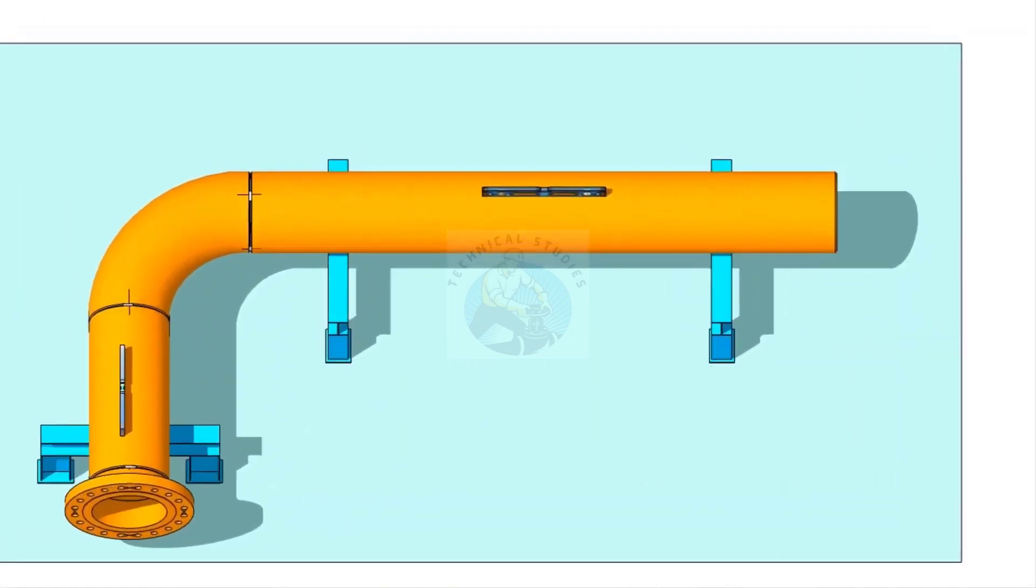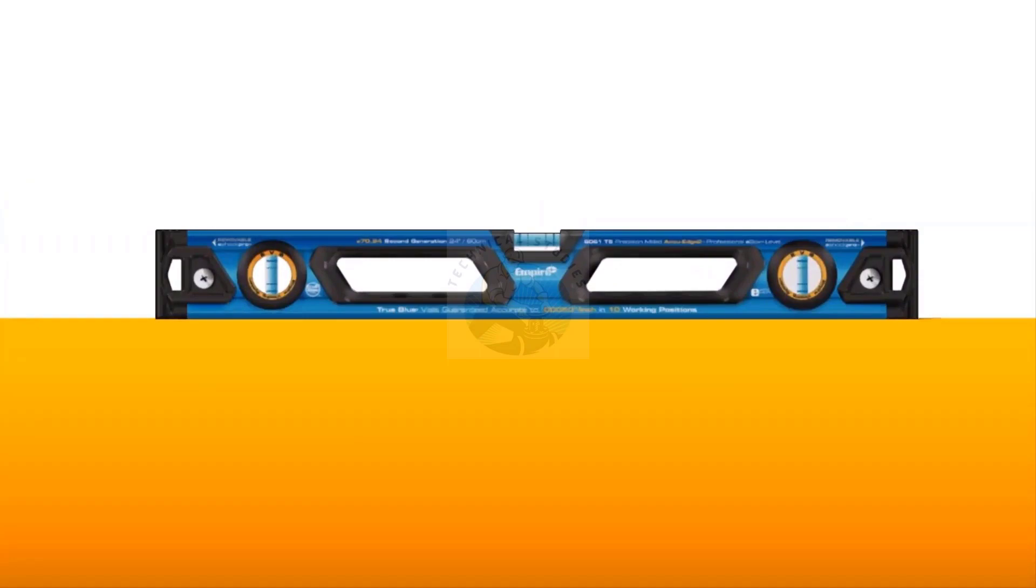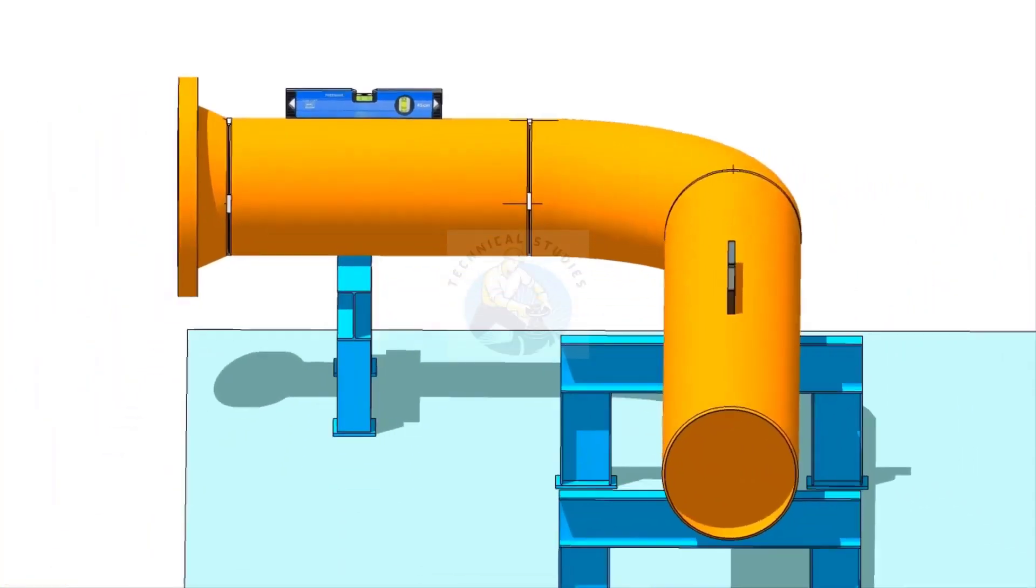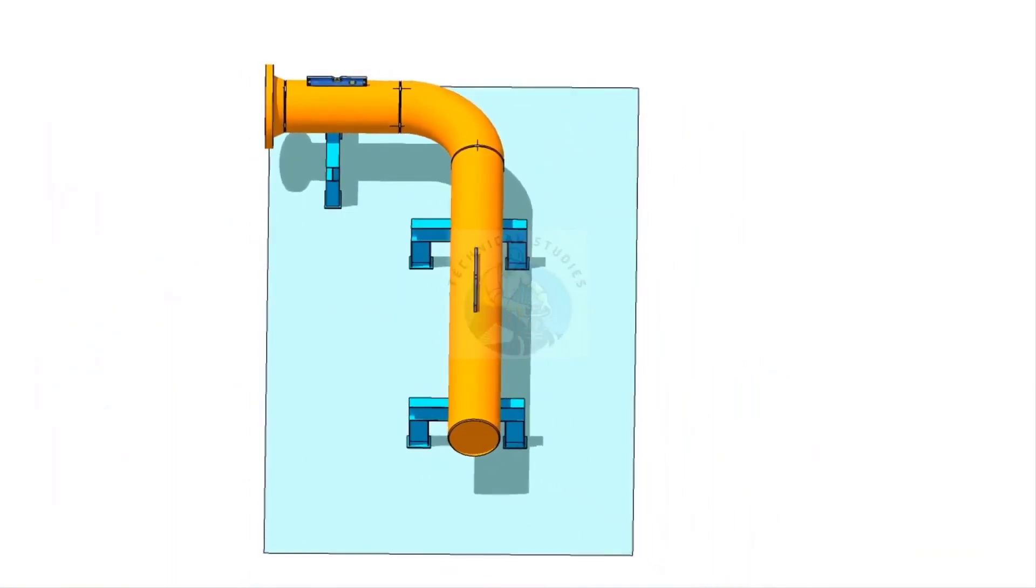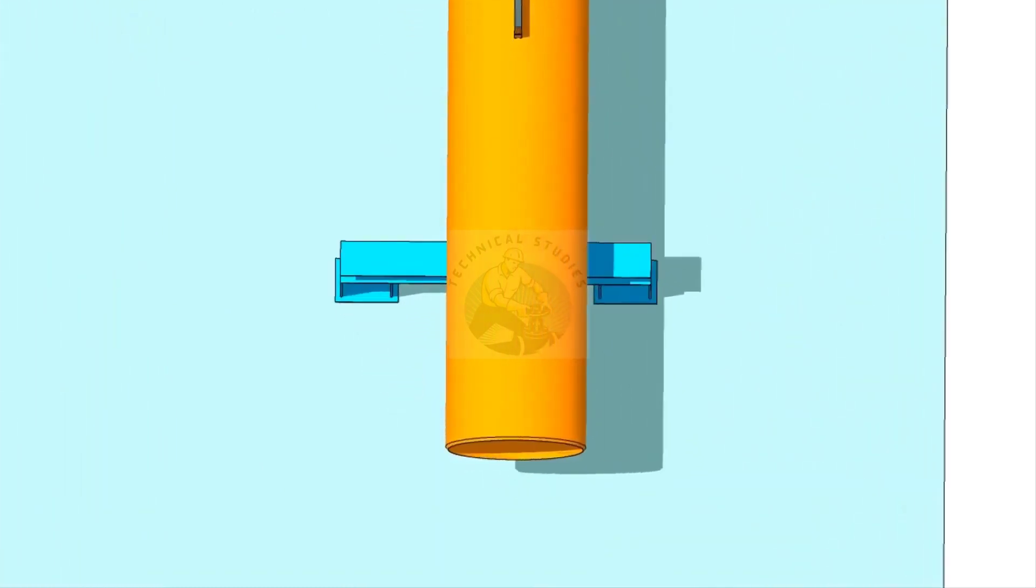Now, go to the existing spool, check the level, and correct it. Mark the zero degree.